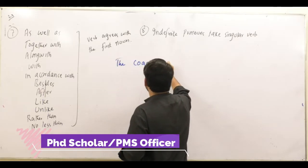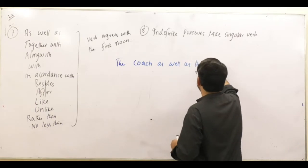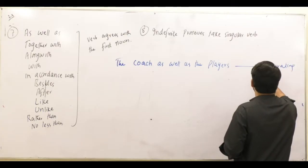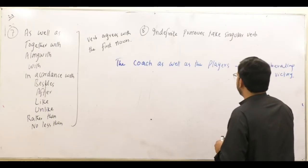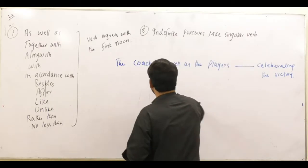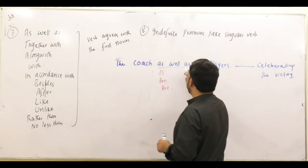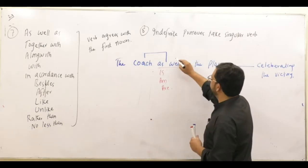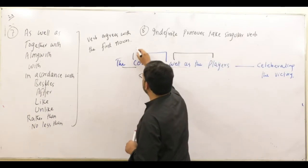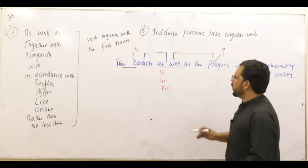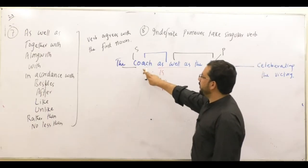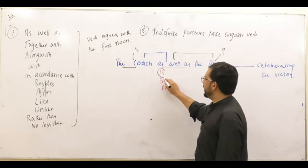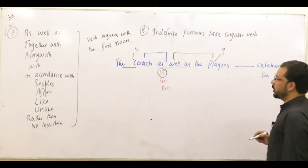The coach, as well as the players, dash celebrating the victory. We have options: is, are. Now look at our example — 'as well as' connects the coach and the players. The coach is singular, and the players is plural. When we use 'as well as', the verb agrees with the first noun. So: The coach, as well as the players, is celebrating the victory.